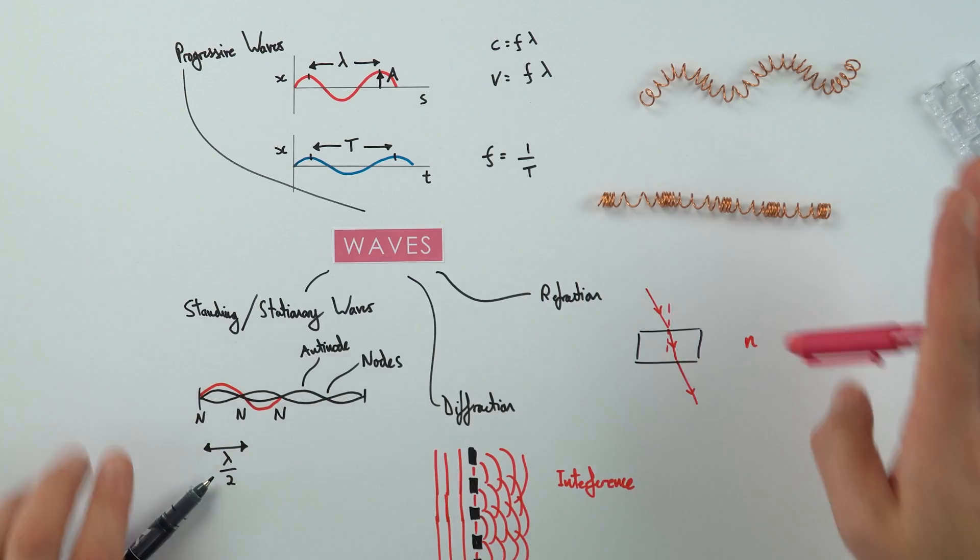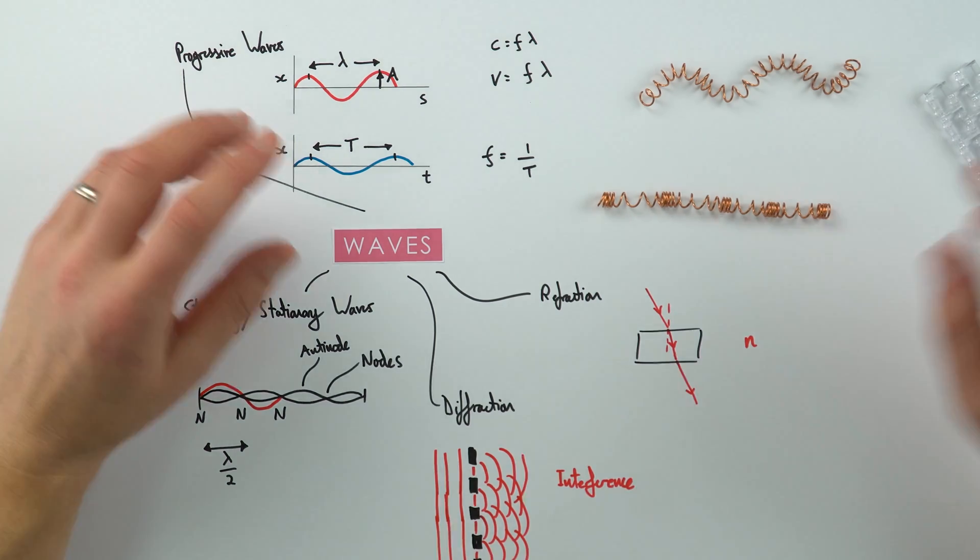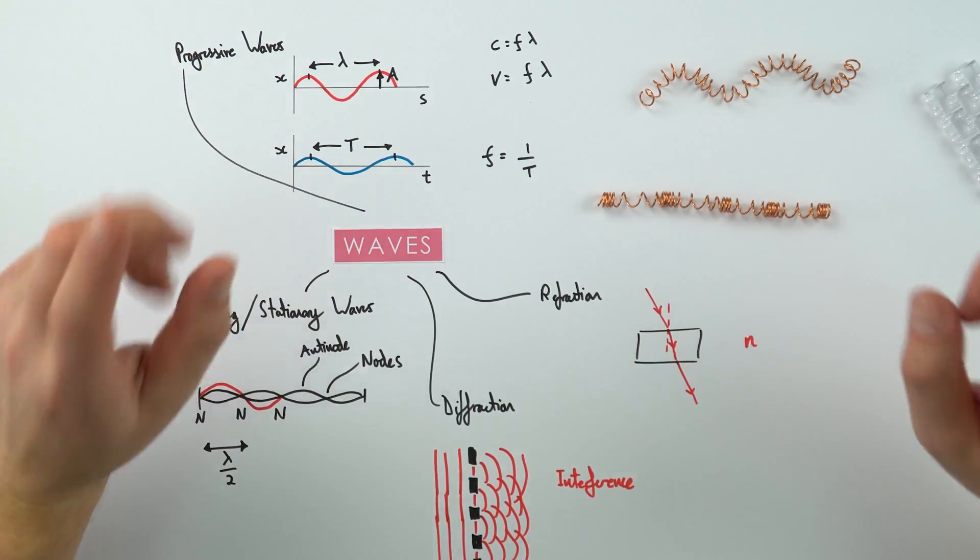This thing over here is where we kind of do spend a lot of time looking at the interference between different waves, especially when we have diffraction gratings and double slits. That is just a bit of an introduction about the things that will be coming up as you do A-level physics and you look at waves.